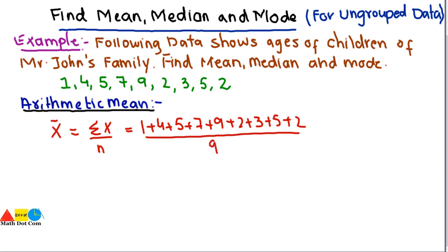There are 9 number of observations, or 9 children of which ages are written here. So we just need to add them together. So after adding we will get 38 divided by 9, and the answer will be 4.22.